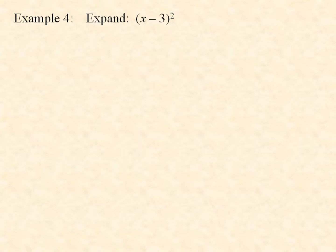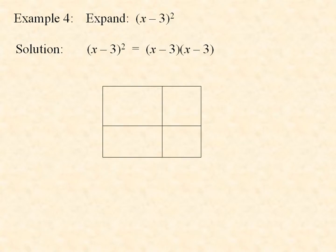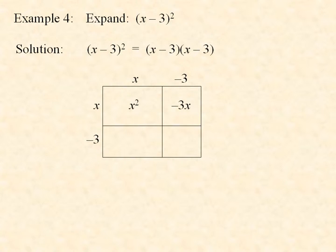One last example. Example 4: Expand the quantity x minus 3 squared. The quantity x minus 3 squared does not mean you square each part. When you square something, you multiply it by itself, so x minus 3 quantity squared means x minus 3 times x minus 3. We draw a rectangle and split it into four pieces. The width is split into x and negative 3, and so is the length. Now we find the areas: x times x is x squared; x times negative 3 is negative 3x; negative 3 times x gives another negative 3x; and negative 3 times negative 3 is positive 9.